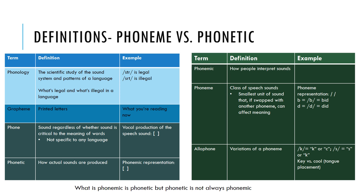When we talk about articulation, we need common language and common rules. There are two perspectives. From a linguistics perspective, they look at how we use speech sounds, how we create them, how we get meaning behind them, and how they're interpreted. From a speech pathology standpoint, we're looking at how the rules of the language affect speech sounds and how they're produced — whether productions meet or don't meet the rules of the language.